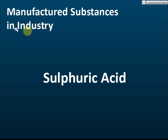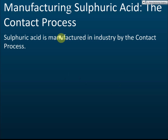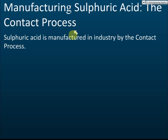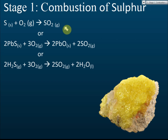We will start with the manufacturing process of sulfuric acid — the Contact Process. You need to remember this name because it may be asked in the exam. They will ask you what the name of the process is. Sulfuric acid is manufactured in industry by the Contact Process, and there are a few stages involved.